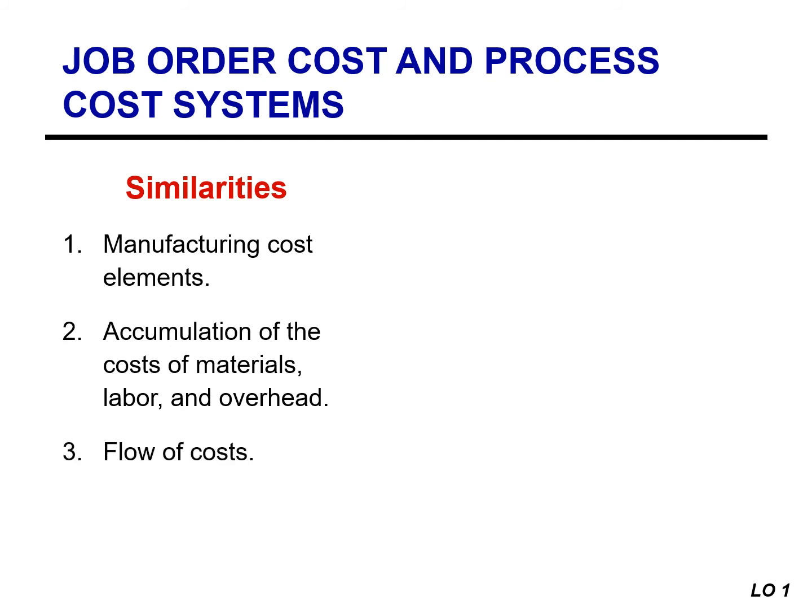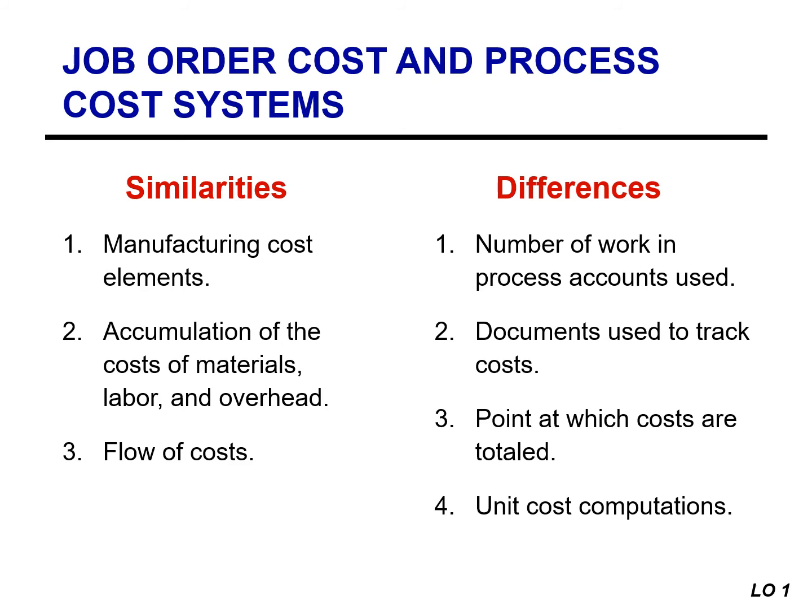The third similarity is the flow of cost. Both systems accumulate all manufacturing costs using the same accounts, and both systems then assign these costs to the same accounts. Both systems will use work in process inventory, finished goods inventory, as well as cost of goods sold. The method of assigning costs, however, will differ significantly. These four differences will be discussed in detail in the next slide.